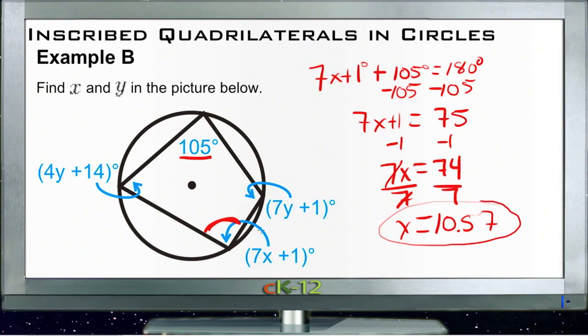So then we know that we also know that 4y plus 14 is added to 7y plus 1 to get to be 180. So we can do that the same way. Let's go ahead and calculate that. We'll leave the x value down here on the bottom.